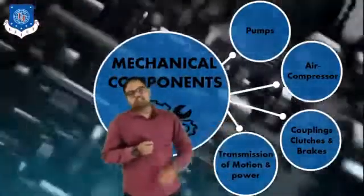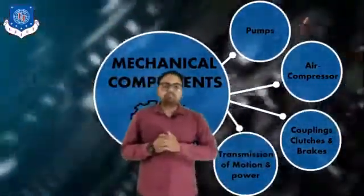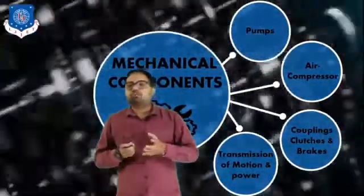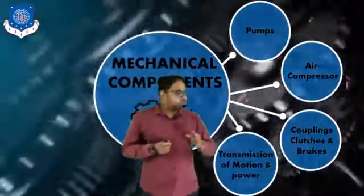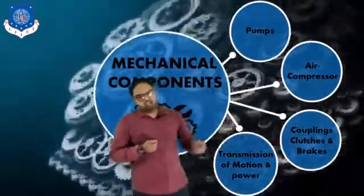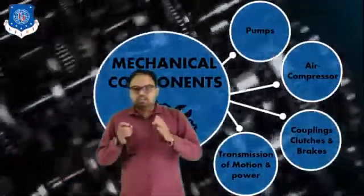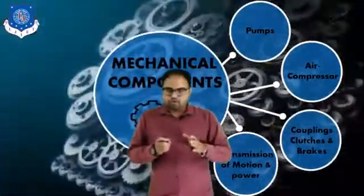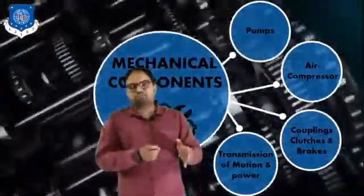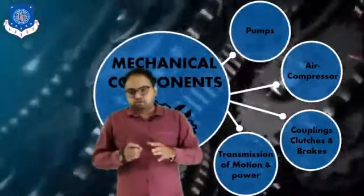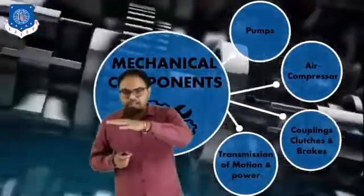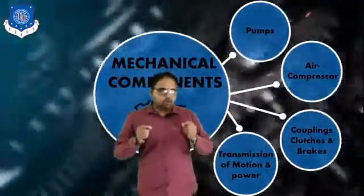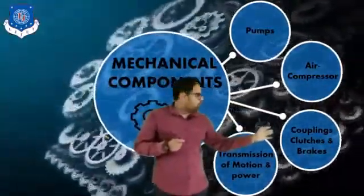Next is coupling, clutches, and brakes. We are all familiar with the word brakes because brakes are used to slow down the motion of a moving machine member. But we don't have enough idea about couplings and clutches. Coupling and clutches are devices which are used to transfer power from one shaft to another shaft — from driving shaft to driven shaft. There is a minor difference between the two, which we will discuss in detail along with all classifications and practical applications.